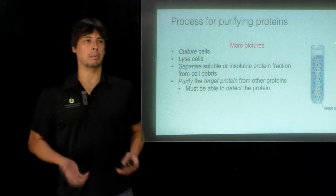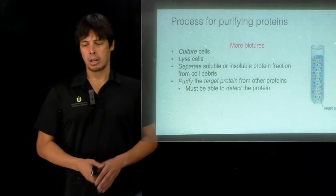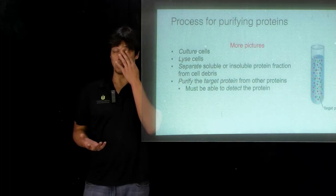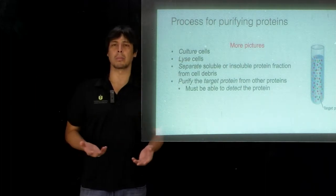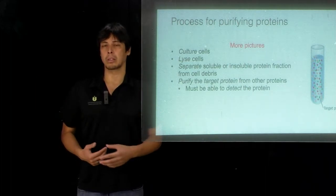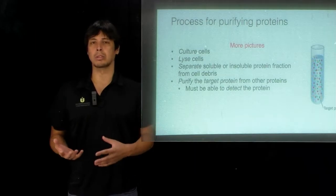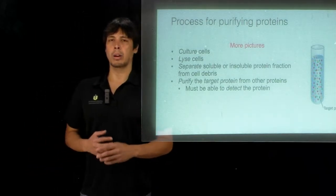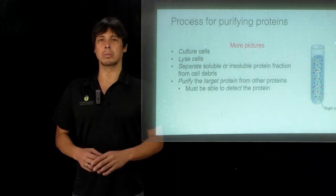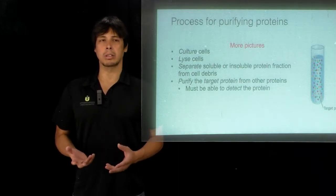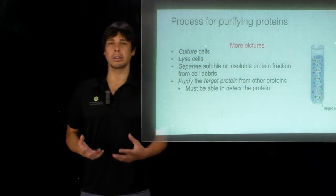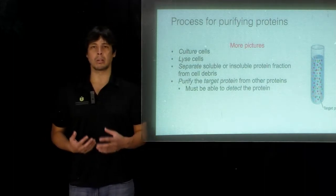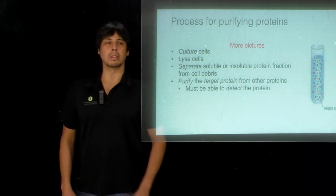This is actually a several-step process because proteins are biological entities. So we have to get these from cells — sometimes from native cells, such as proteins from human cells or bacterial cells. Either way, what we need to do first is we need to culture these cells, which means growing them somehow in the lab so that we can prepare enough cells to isolate the protein from.